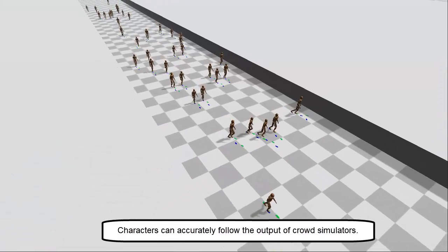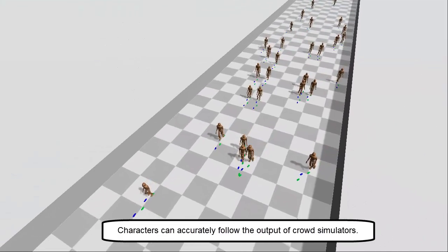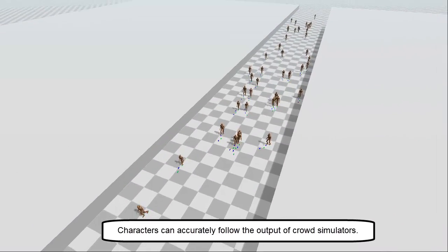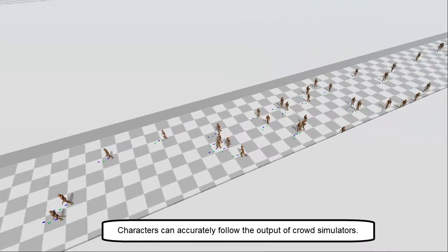Here is an example of a simulation with over 100 agents at interactive rates following the output trajectories of a crowd simulator.